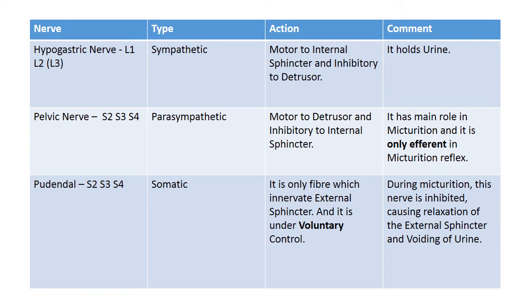The last is the pudendal nerve, which is somatic in nature. It is the only fiber which innervates the external sphincter and is under voluntary control. So during micturition this nerve is inhibited, causing relaxation of the external sphincter and voiding of urine occurs.